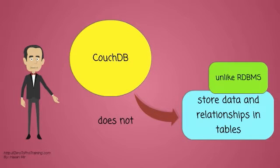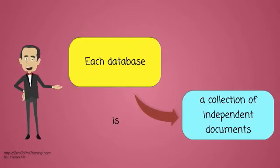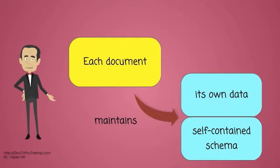Unlike in a relational database, CouchDB does not store data and relationships in tables. Instead, each database is a collection of independent documents. Each document maintains its own data and self-contained schema.